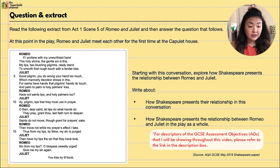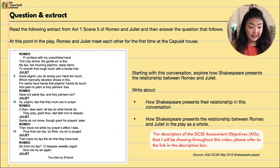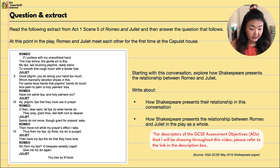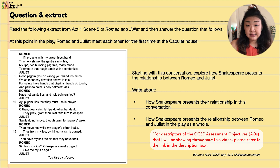This question gives us an extract from Act One Scene Five of Romeo and Juliet and asks us to answer the question that follows. At this point in the play, Romeo and Juliet meet each other for the first time at the Capulet house, because the Capulets were hosting a party and Romeo tried to infiltrate the party with his masquerade mask. You can take a screenshot of the extract or refer to your own copy of the play.